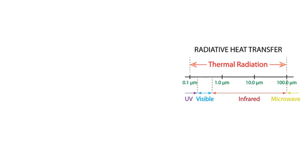The sun emits thermal radiation at an effective surface temperature of 5760 K, and the bulk of this energy lies between λ = 0.1 to λ = 3 micrometers — referred to as solar radiation. The radiation energy emitted by the sun in the wavelength between λ = 0.4 to λ = 0.76 micrometers is visible to the human eye, and therefore this spectrum is referred to as visible radiation, termed as light.